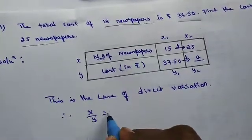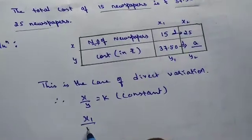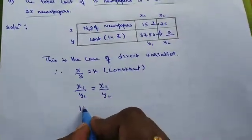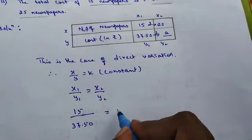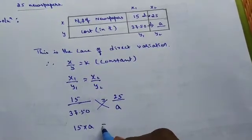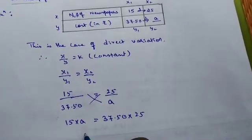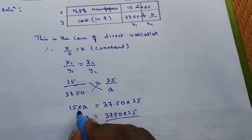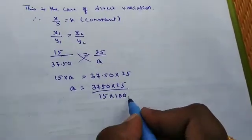Therefore, X by Y equal to K which is nothing but constant. Write down the formula for the direct variation. That is X1 by Y1 equal to X2 by Y2. Substitute their values. 15 divided by 37.50. Be careful children here. 25 divided by A. Then cross multiply. 15 into A equal to 37.50 into 25. First, let me remove the decimal point here. A equal to 37.50 into 25. Divide by this is under multiplication. That is 15 and A changes to division into 100. Because after decimal point we have 2 digits. Now, 00 cancels.